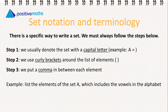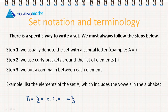Let's do an example. List the elements of the set A which includes the vowels in the alphabet. Step one, we use our capital letter — we let A be equal to the list of elements in curly brackets — so we're going to have A, E, I, O, and U. If you start off always doing it correctly, it will become second nature and soon you won't have to think about it.